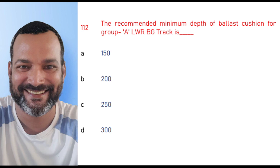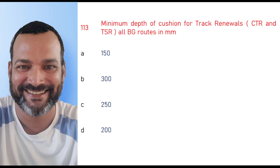The recommended minimum depth of ballast cushion for Group A LWR BG track is 300 mm. Minimum depth of cushion for track renewals — that is CTR and TSR — for all broad gauge routes in main line is 300 mm.